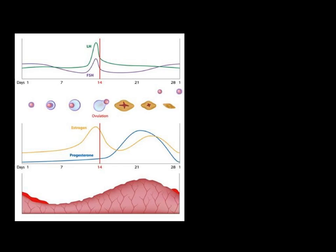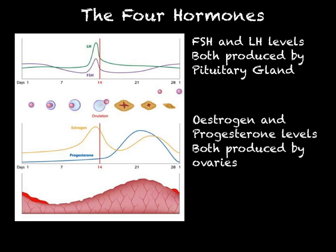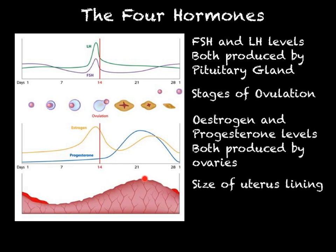Here we have a graph showing the changing levels of hormones in the menstrual cycle. We can see the increase in FSH as well as the increase in oestrogen, which causes a spike in LH just before day 14, before we get an increase in progesterone — showing the different hormones interacting with each other. We also have a diagram of the different stages of ovulation: the egg inside the follicle, the follicle breaking apart to release the egg at ovulation, and its conversion into a corpus luteum. At the bottom we can see the uterus lining, including the menstruation period and the build-up of the lining.